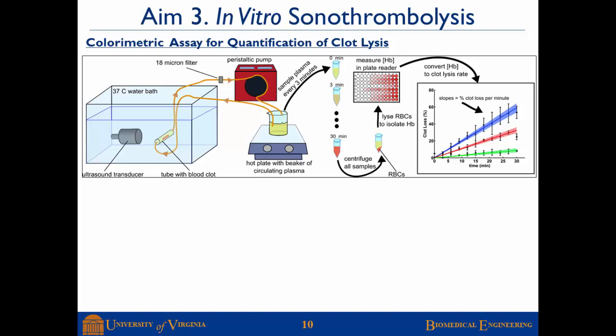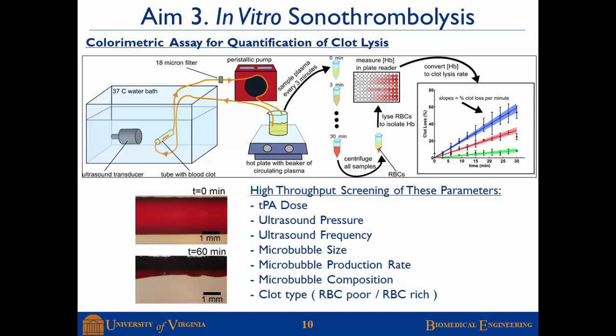For aim three, we used these microbubbles in a standard in vitro sonothrombolysis assay. A blood clot in a tube is exposed to ultrasound in a water bath, with circulating human plasma containing microbubbles and tissue plasminogen activator. As the clot is eroded, red blood cells leave the clot and enter the plasma. We sample the plasma every three minutes and quantify clot loss by measuring hemoglobin concentration. This is a relatively high-throughput assay for screening TPA dose, ultrasound parameters, and microbubble parameters.